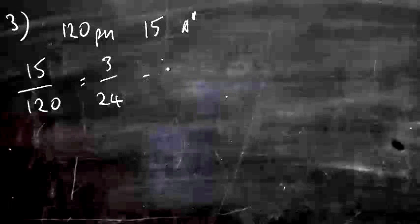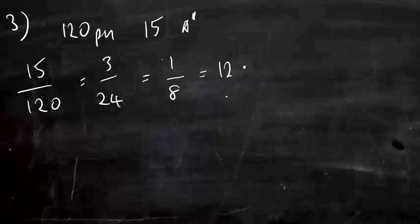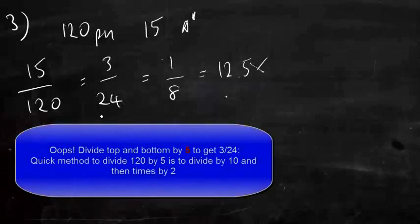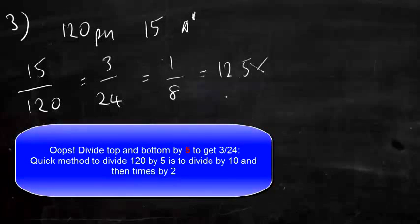In a year group of 120 pupils, 15% achieved an A-star in GCSE English. What percentage of the year group achieved an A-star? So 120 is an awkward number, so we simplify the fraction as best we can. Divide top and bottom by 3 to get 3 24ths, divide by 3 to get 1 8th. And 1 8th is one of those fractions you have to memorize. It's 12.5%.